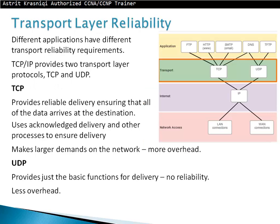Transport layer reliability: different applications have different transport reliability requirements. TCP/IP provides two transport layer protocols — TCP and UDP. TCP provides reliable delivery, ensuring all data arrives at the destination, using acknowledgements and other processes to ensure delivery, but it makes larger demands on the network with more overhead. UDP provides just the basic functions for delivery, with no reliability, less overhead, and is a lot faster.